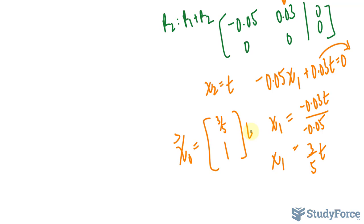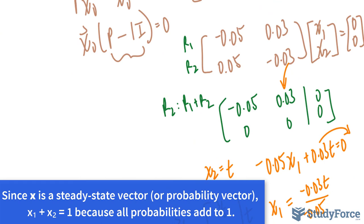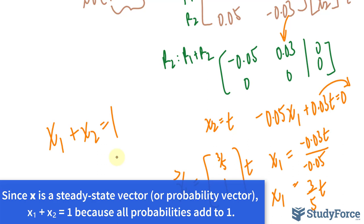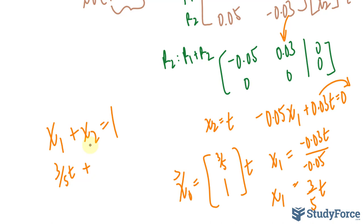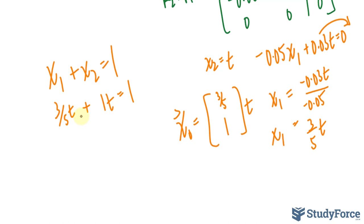So our steady state vector is defined as 3 over 5t and t, or simply 1 underneath here times t. Now because the columns of the transition matrix added to 1, x sub-1 and x sub-2 should equal to 1. So I'll replace this part with 3 over 5t, and this part with 1t is equal to 1. Subsequently, solving for t is 5 over 8.